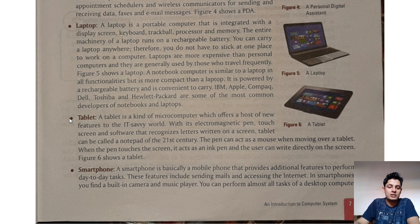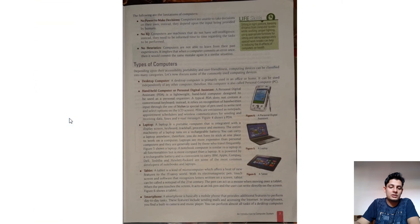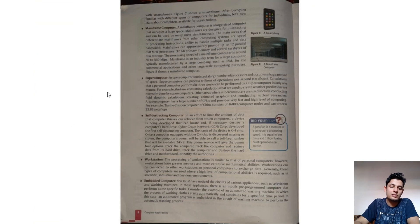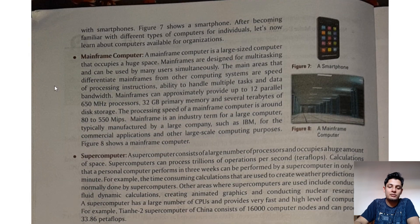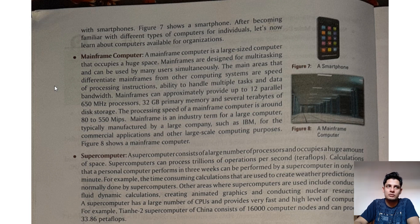Now we see page number 8. Figure 7 shows a smartphone. After becoming familiar with different types of computer for individuals, let's now learn about computers available for organizations. A smartphone is a kind of handheld device which is capable of performing a good quality of tasks.